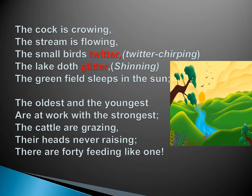In the first stanza — 'the cock is crowing' means the cock crows in the early morning. If a cock is nearby your house, it makes a sound that wakes you up. This indicates a new day or the rise of the day. 'The stream is flowing' — as usual the stream is flowing. 'The birds twitter' — twitter means chirping, the sound birds make. 'The lake doth glitter' — when the stream is flowing and the sun is rising, the sun's rays fall on the lake, which makes it glitter, meaning shine.